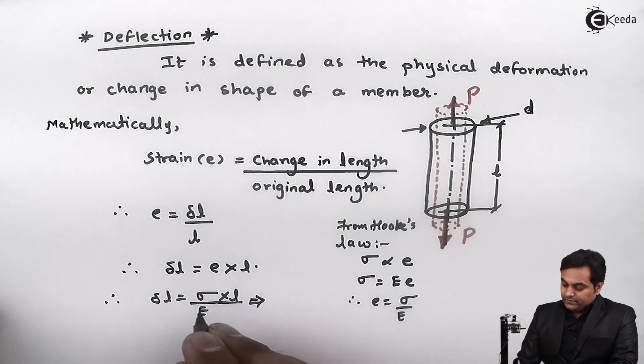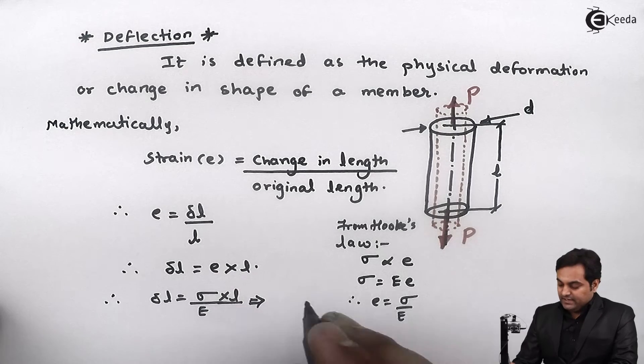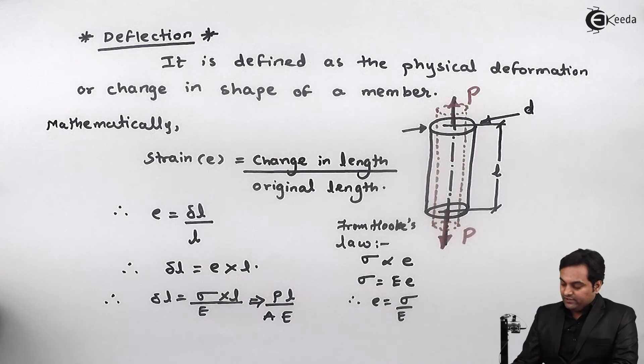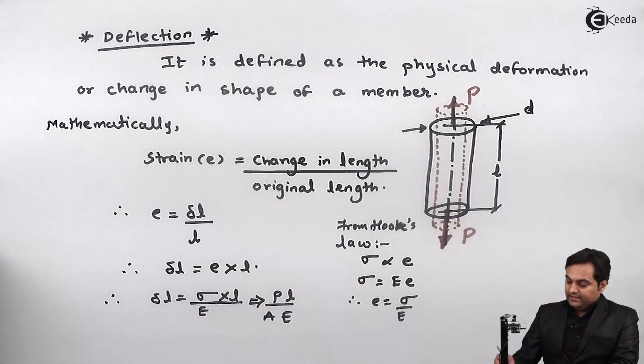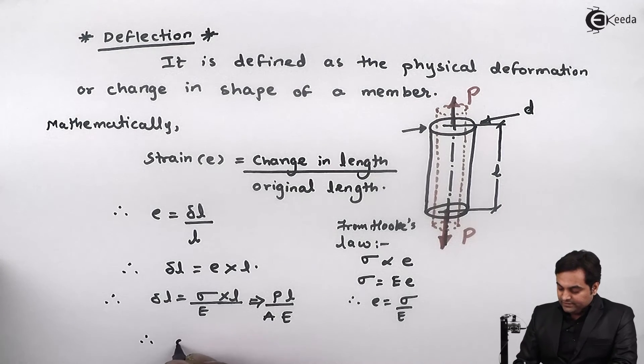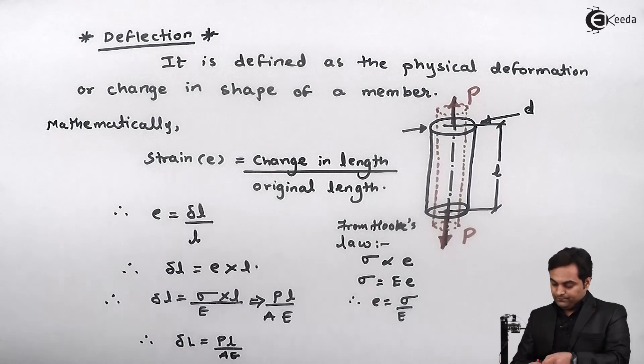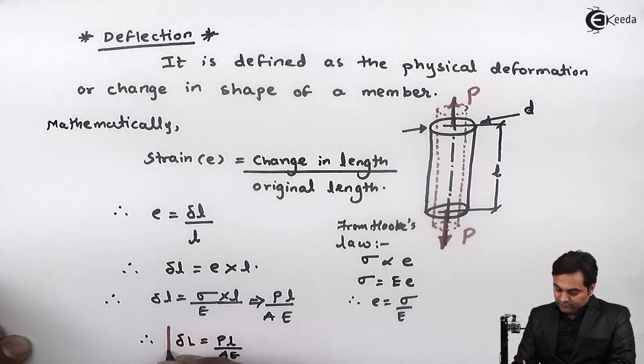Now this stress can be written as load upon area. In the numerator we have P×l, in denominator we have A, so finally I arrive at a formula that deflection is equal to Pl upon AE.